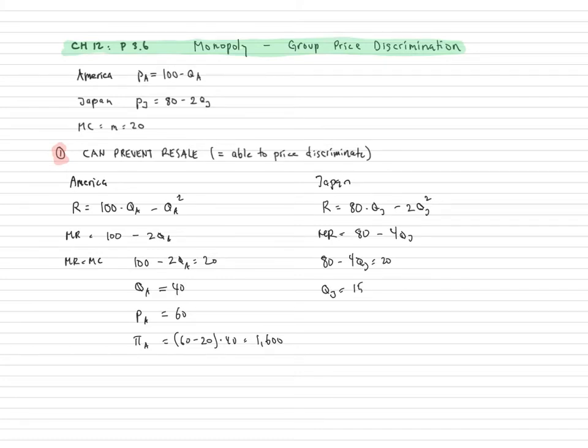Equal to 15. The price charged in Japan is going to be 50. And the profit made in Japan is going to be equal to 50 minus 20 times 15 equals 450. All right.